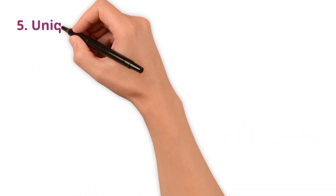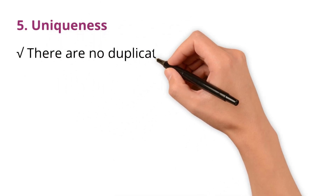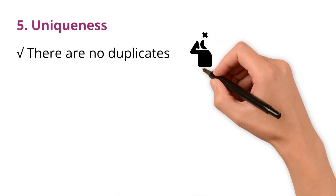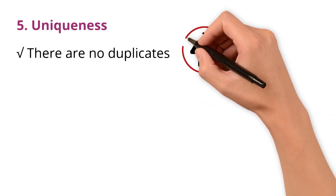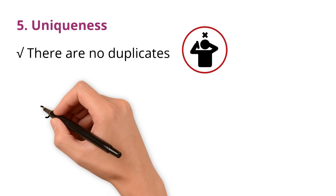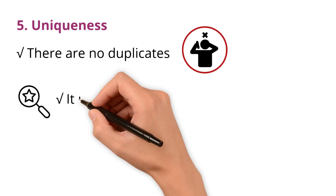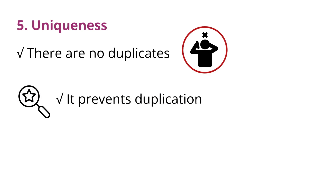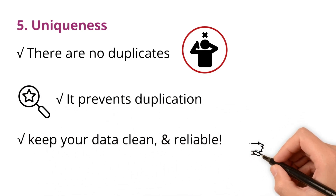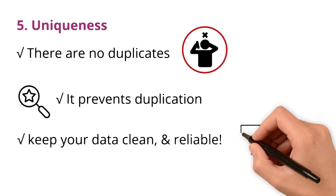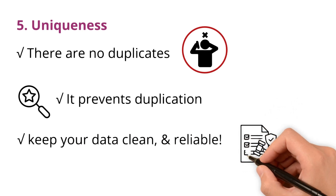Uniqueness makes sure there are no duplicates. Like, you don't want to accidentally bill the same person twice because their data was entered more than once. Uniqueness is important because it prevents duplication, which helps keep your data clean and reliable. When data is unique, you can trust that each entry represents a distinct entity without any repetition.